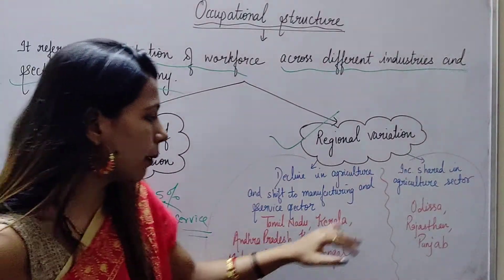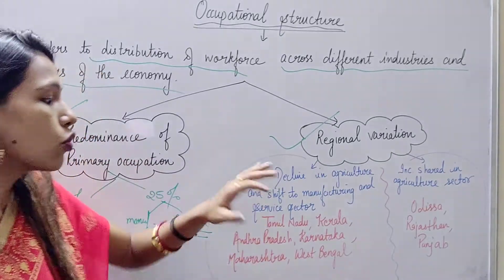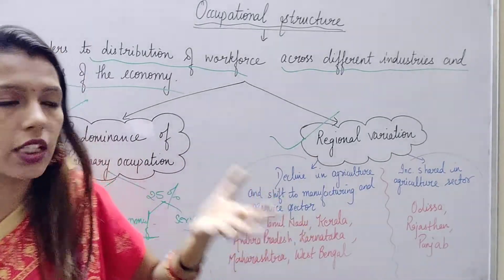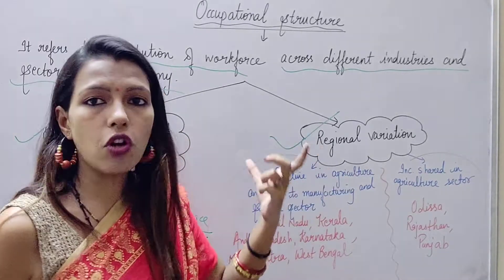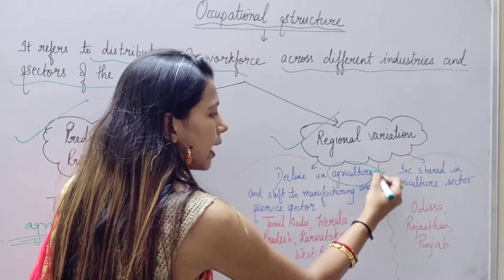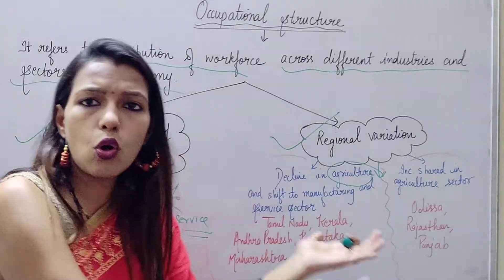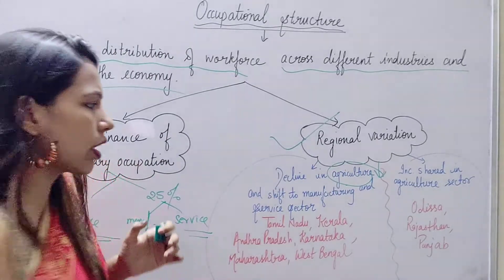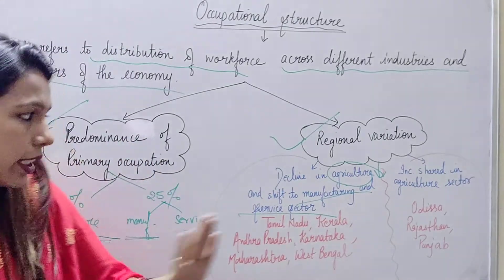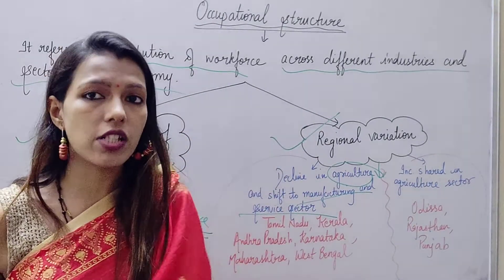And if we talk about Tamil Nadu, Kerala, Andhra Pradesh, Karnataka, Maharashtra, and West Bengal — these are the states where a change occurred in the occupational structure. The share of the workforce in the agriculture sector declined in these states, and people shifted to the manufacturing and service sector. So within one country, there was an occupational structure difference according to different states.